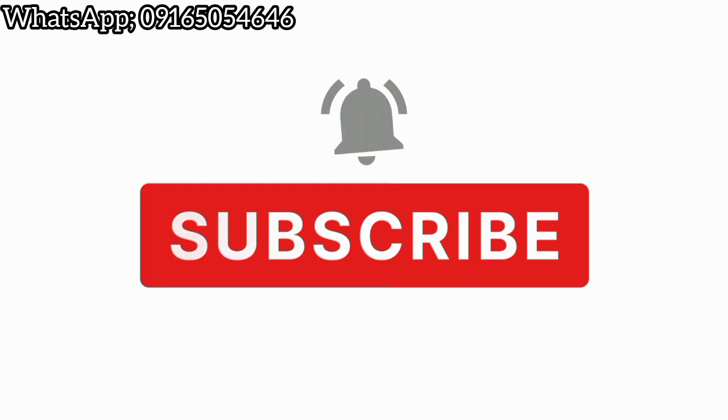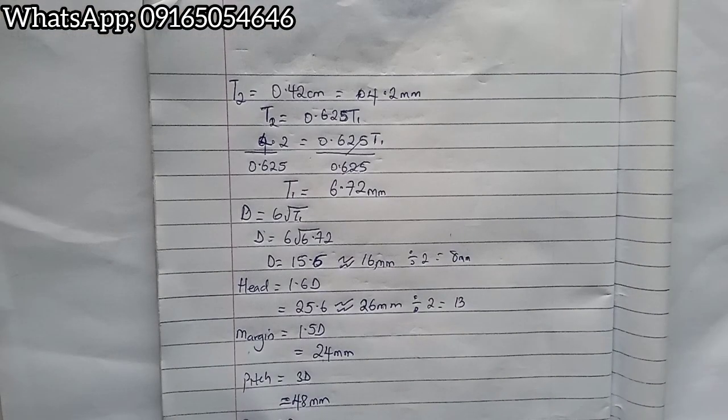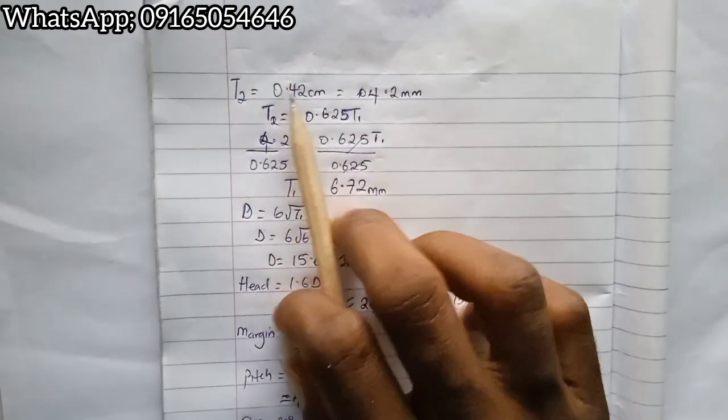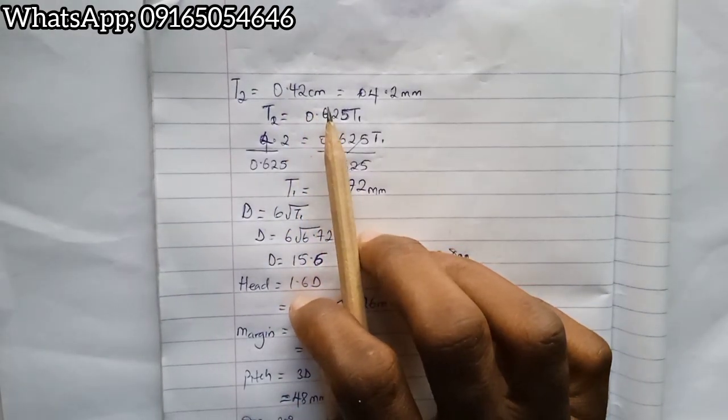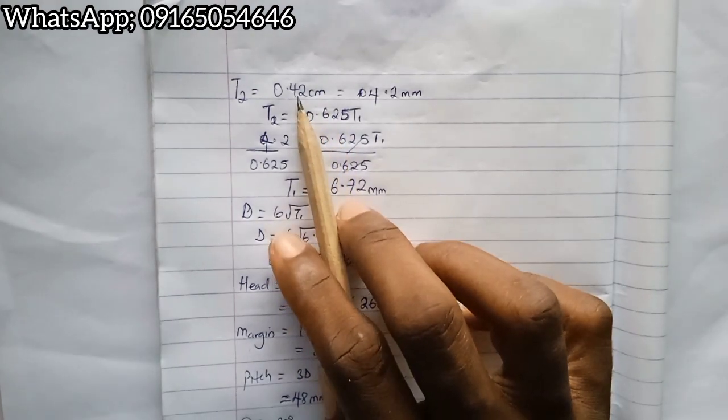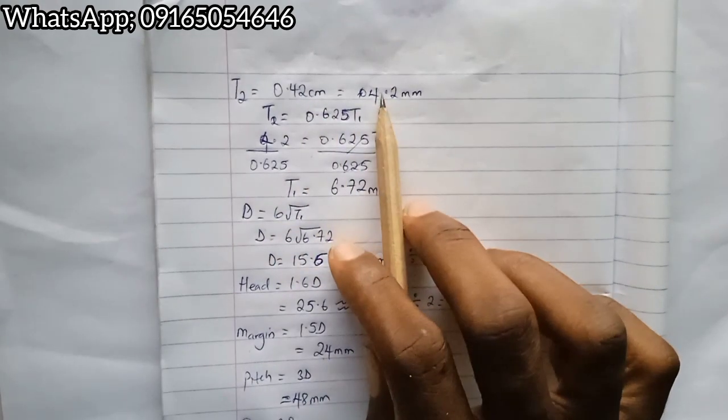I'm solving a past question for engineering drawing. We're given thickness to be equal to 0.42 cm, but we know that as far as drawing is concerned all dimensions are in millimeters. So we have to convert this to millimeters, which means I multiply by 10 and I will have 4.2 millimeters.